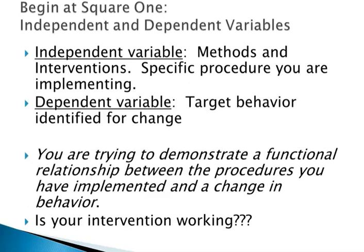Beginning back at square one, we have to review what the independent and dependent variables are. An easy way to remember this is: I for independent, I for intervention. The independent variable is basically the intervention, and the dependent variable is the outcome you're hoping for — that's the change in behavior.